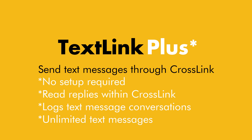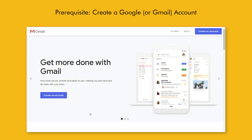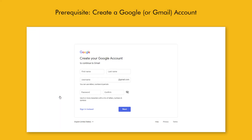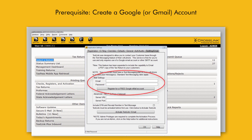However, if you would like to benefit from sending text messages right away, or just want to try out the convenience of sending text messages through your Crosslink software, here's how you can get started with the basic TextLink feature. It's important to understand that to use TextLink, you should have a Google email or Gmail account. This Gmail account will be configured to send text messages from your Crosslink software.